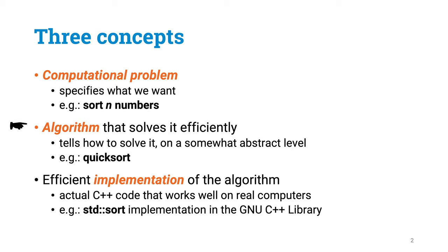Second, there are algorithms that are abstract descriptions of how we can solve the computational problem. This is something like the quicksort algorithm. We are working on the level of, for example, pseudocode here. And finally, there are concrete implementations of algorithms. And now we are talking about something like real working C++ code.